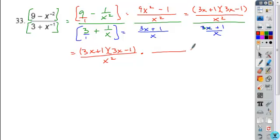And we're going to invert and multiply by our denominator. So the x gets moved from the denominator to the numerator. 3x plus 1 gets moved to the denominator. And then it's just a matter of canceling common factors. So the x's cancel, the 3x plus 1's cancel, and we're left with our answer in this form.